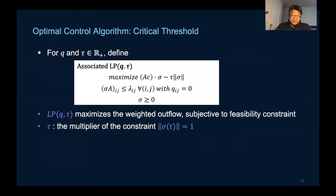One of the reasons that the C-mu policy cannot be optimal in general is that it actually does not always maximize the weighted outflow as it did in the single server multi-class queueing system.